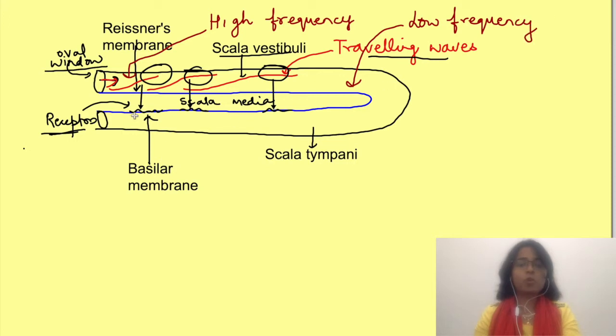The part of the cochlea near the oval window is known as base, while the last part is known as apex. Wherever the maximum height of the wave is reached, it sets up maximum vibrations there. High frequency will set up maximum vibrations of basilar membrane near the base, while lower frequencies at the apex of cochlea.